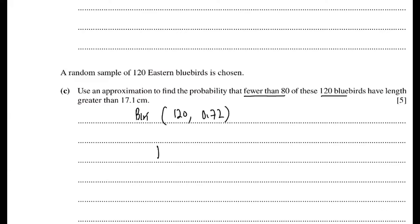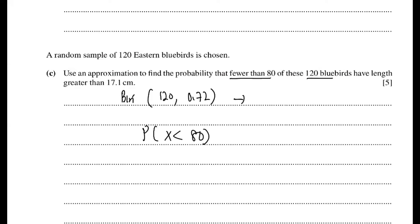So what are you looking for? You're looking for probability of x is less than 80. So therefore you must convert to a normal distribution first. np, np(1-p). Find a new mean and new variance.